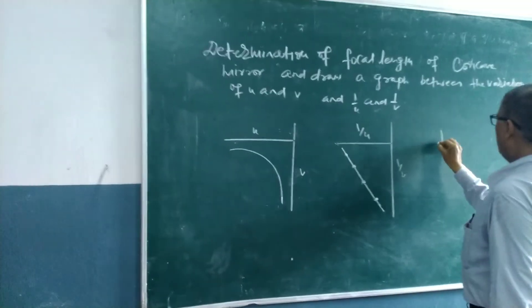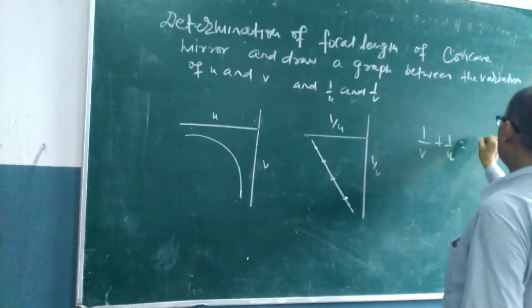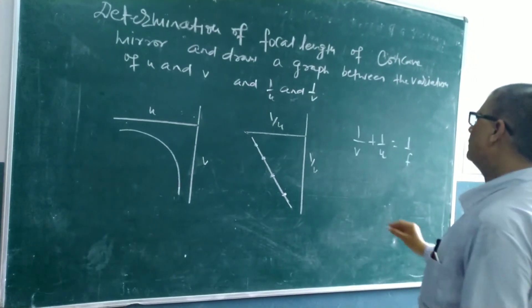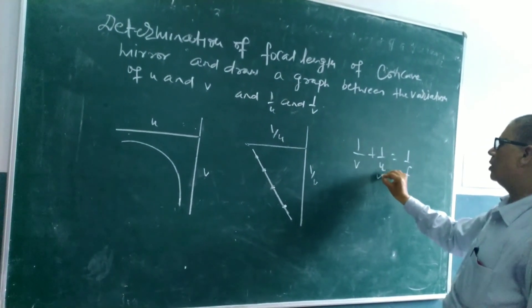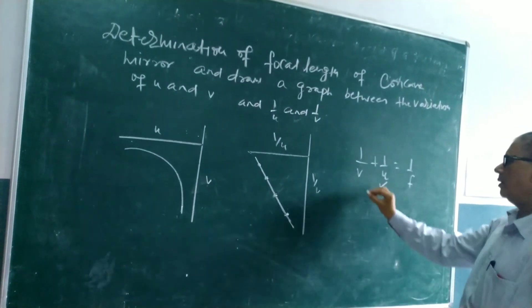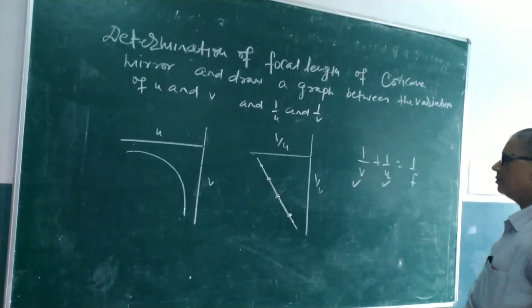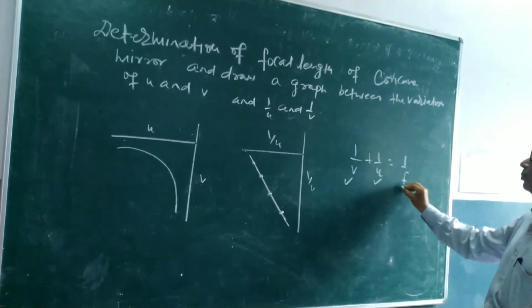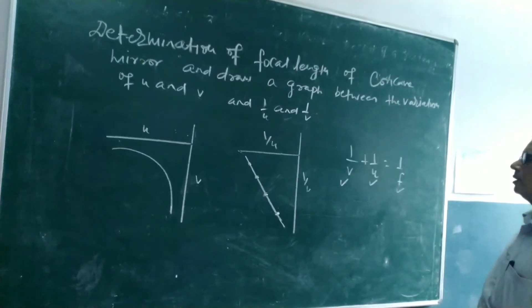Now by using the formula, that is one by v plus one by u equals one by f. Here u stands for object distance, v stands for image distance, and f for the focal length of the concave mirror.